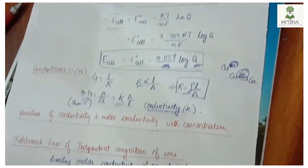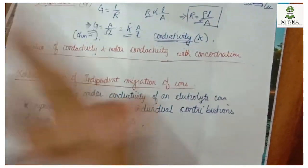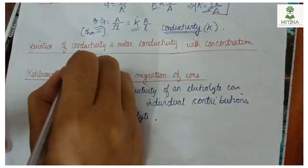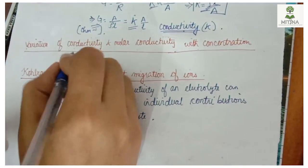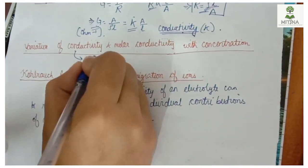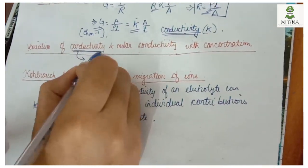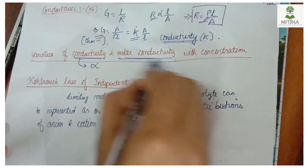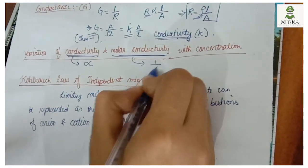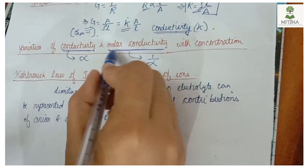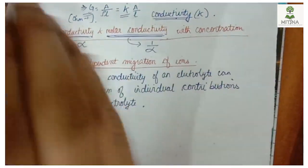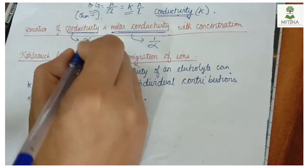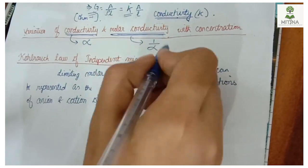There are variations of conductivity and molar conductivity with concentration. Conductivity increases with an increase in concentration — they are directly proportional. Molar conductivity, on the other hand, increases when concentration decreases — it is inversely proportional to concentration.